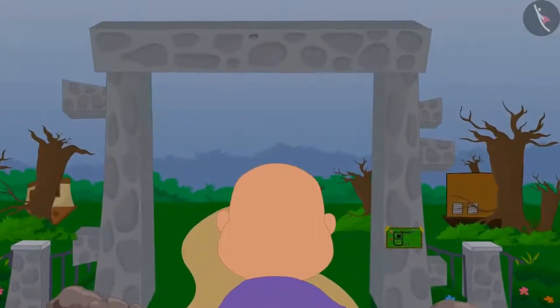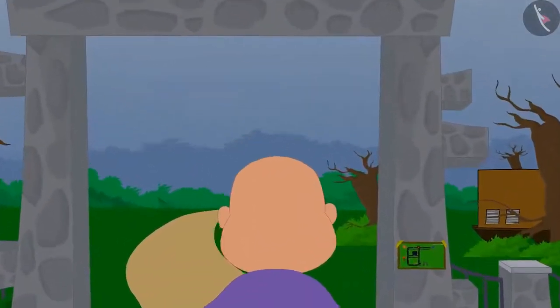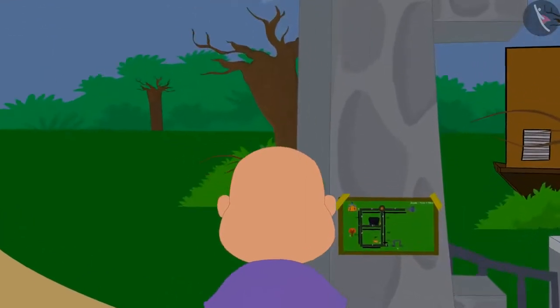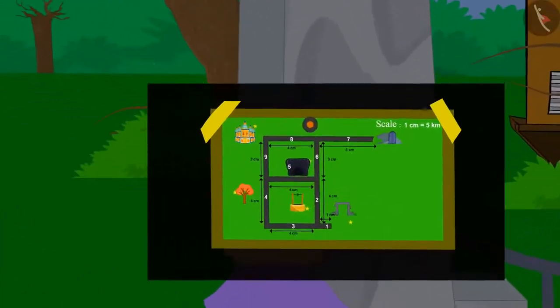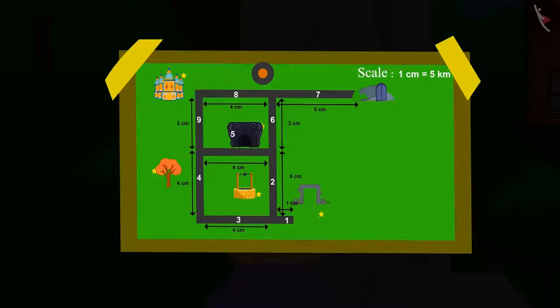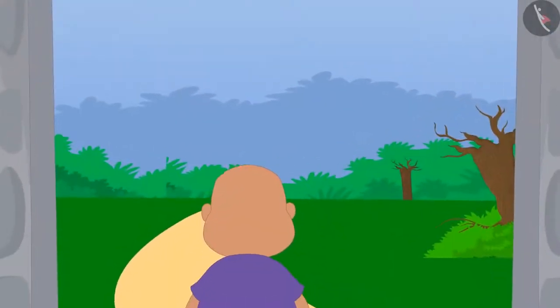One day, Bablu reached the village of Ulta Pulta. As soon as he reached the gate to go inside, he found a map which was upside down. Bablu was extremely naughty.